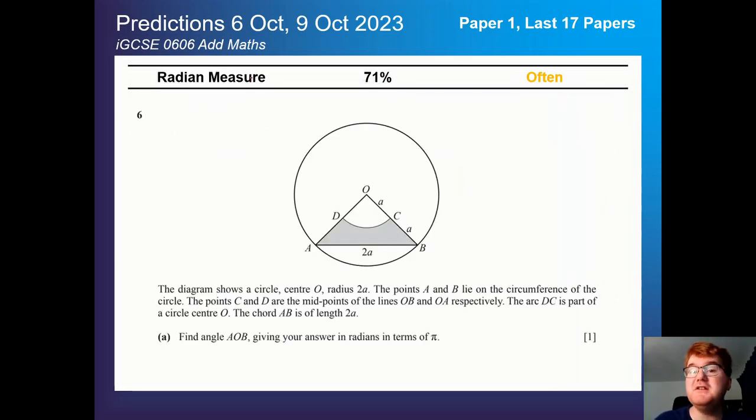Then we have radian measure at 71% as well, very common, more common on Paper 1 than on Paper 2. You can see a sample question here in front of you. If you need to practice this particular topic, I've done a video where I go into a deep dive on this topic, so check that out above.